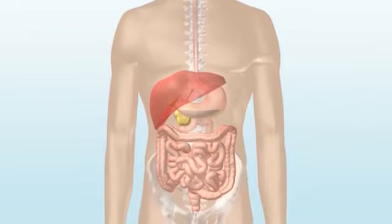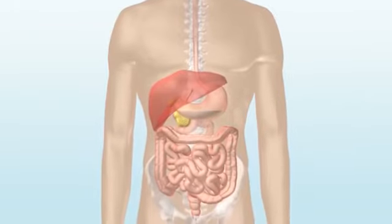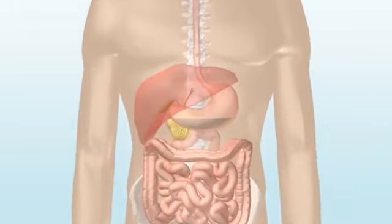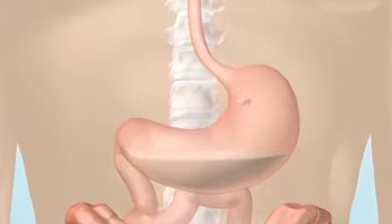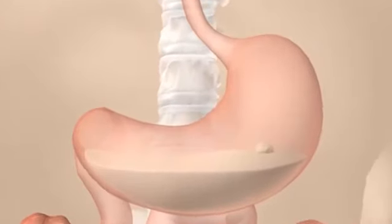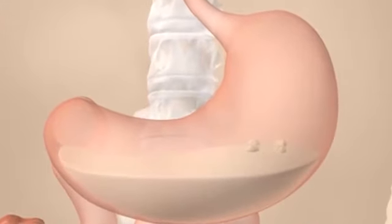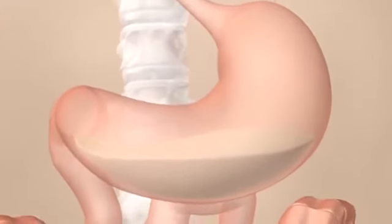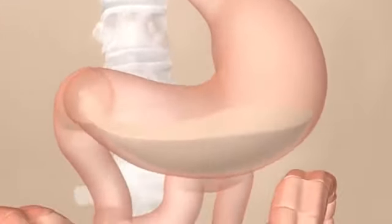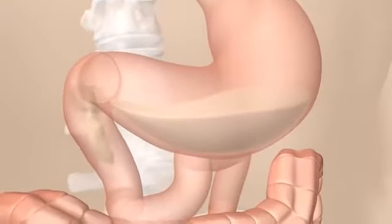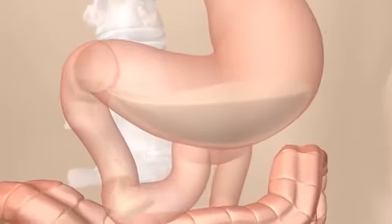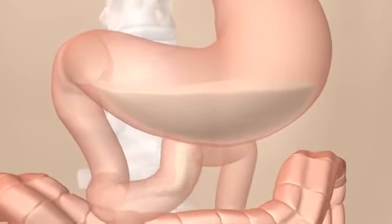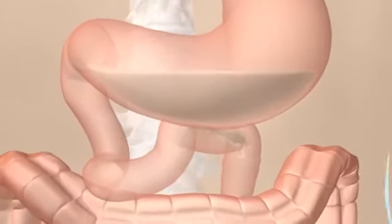In the stomach, the food is broken down into smaller pieces and digestive juices are added. The now liquid food is passed on to the small intestine, where the nutrients are absorbed and digested.